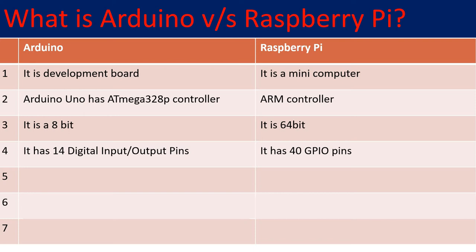Arduino has 14 digital input/output pins, from pin number 0 to pin number 13, which you can configure as input or output. Whereas Raspberry Pi has 40 GPIO pins, and here also you can configure them as input or output.